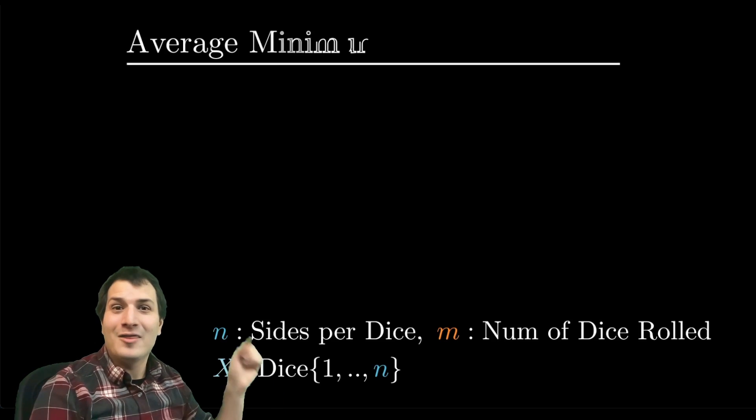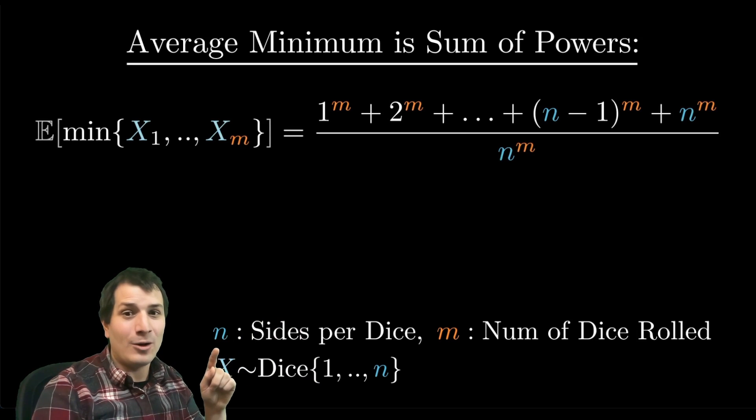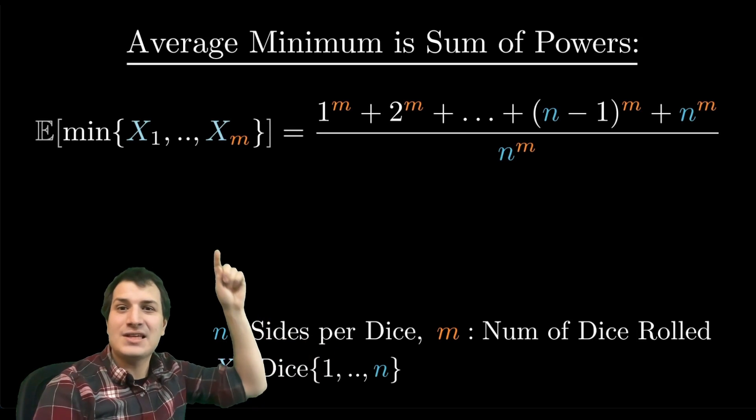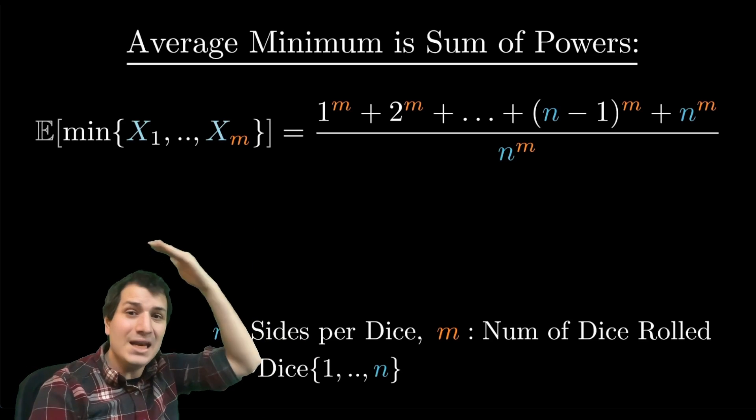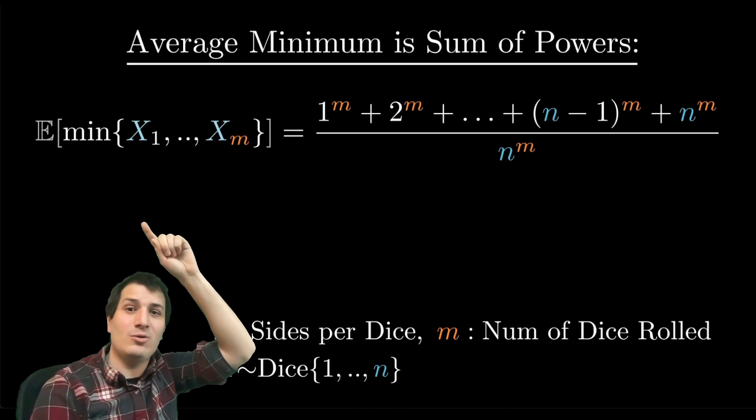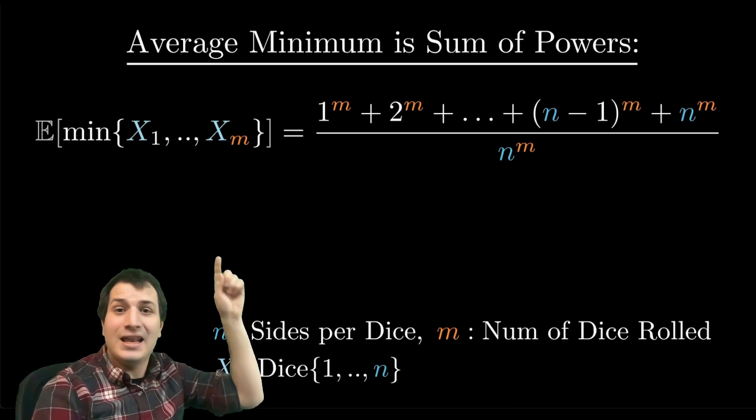Here's a quick probability fact that I call the average minimum is the sum of powers. This is a probability problem about rolling n-sided dice. You roll them m times, giving you a collection x1, x2, all the way up to xm. We take their minimum value and ask what is that on average. What is the expected value of the minimum of m independent n-sided dice?